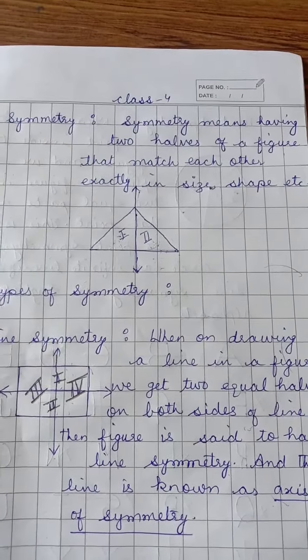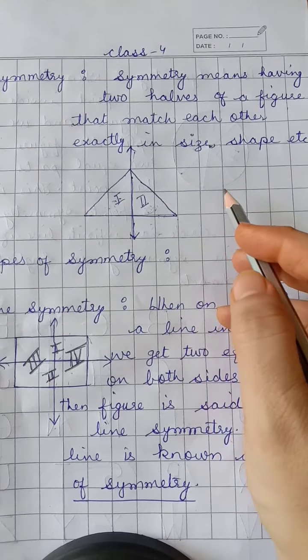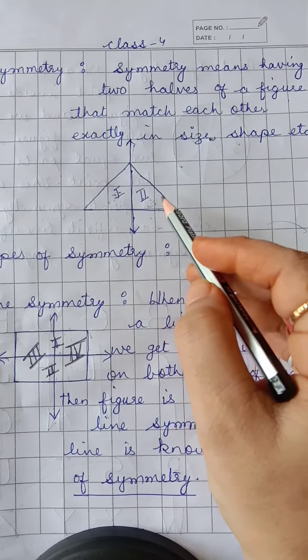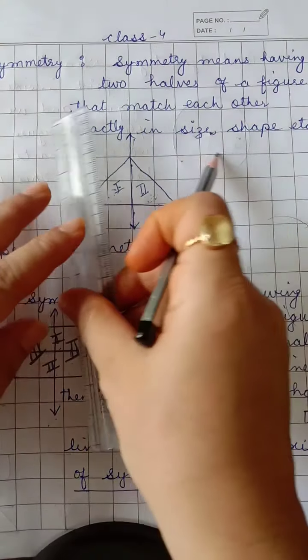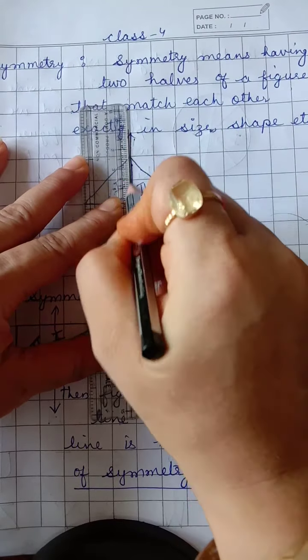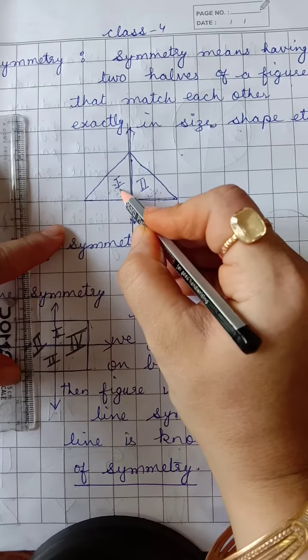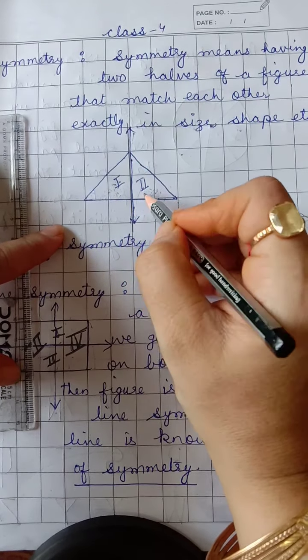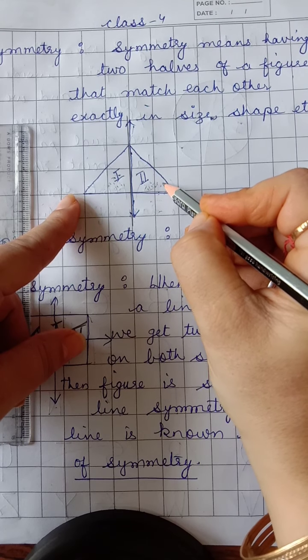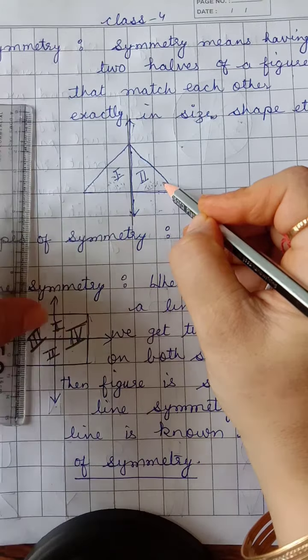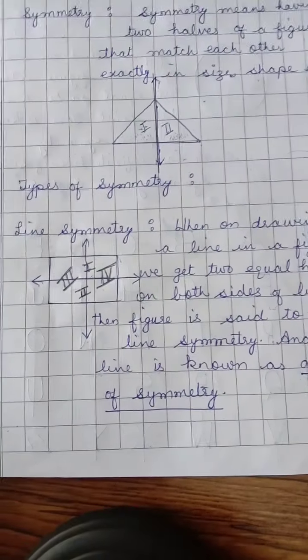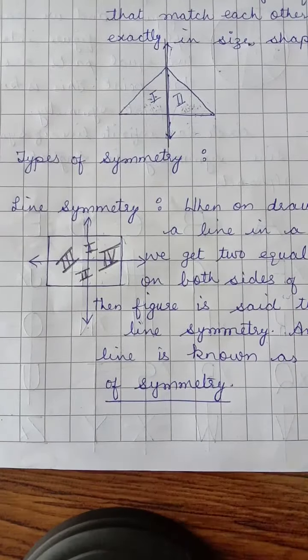For example, this is a triangle. If I draw a vertical line in between the triangle like this, then this triangle is divided into two equal halves. These two halves are exactly the same — they resemble each other and are equal in size and shape. If I fold this triangle along this line, then one half will overlap the second half because these are exactly the same.